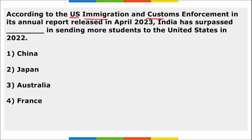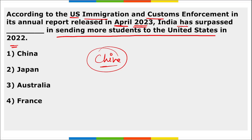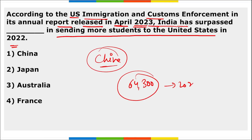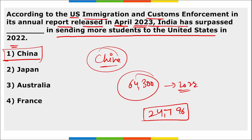According to the U.S. Immigration and Customs Enforcement annual report released in April 2023, India surpassed China in sending more students to the United States in 2022 for higher education. India sent approximately 64,300 students to America in 2022, while China's numbers shrank to just 24,796. India has also surpassed China to become the world's most populous country.